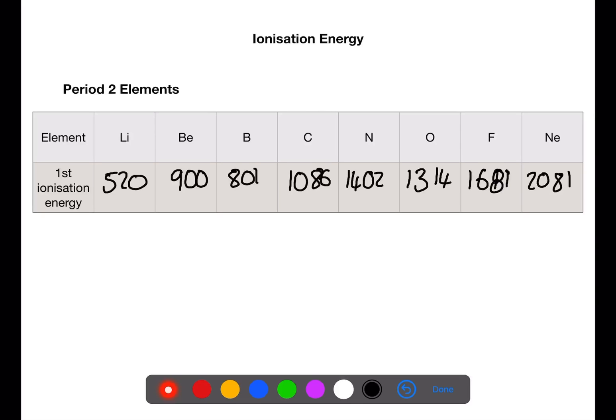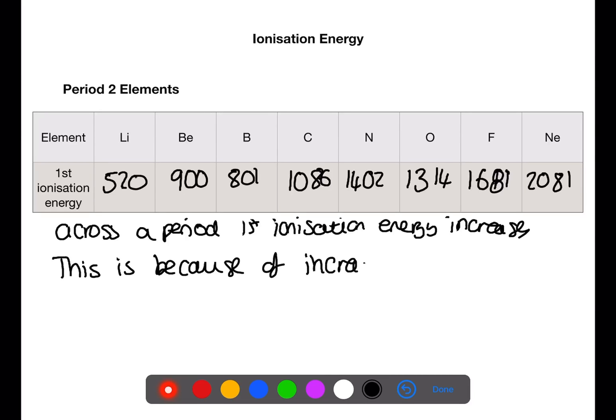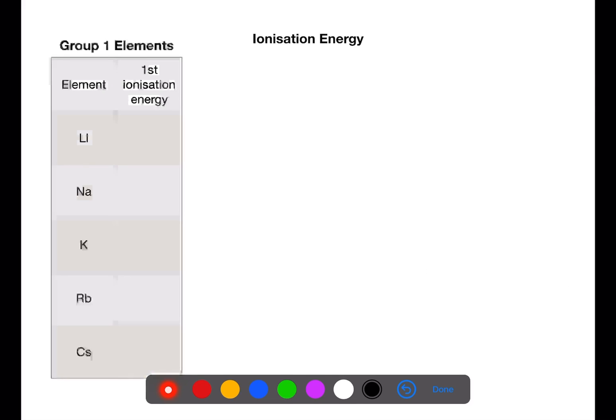What is the general trend that we can see here? In general, moving across a period, the first ionization energy increases. This is because of increasing nuclear charge. This holds the electrons more strongly. Use your data book to find the first ionization energy for the group 1 elements.